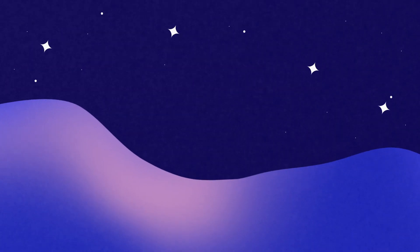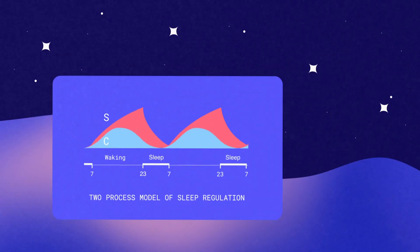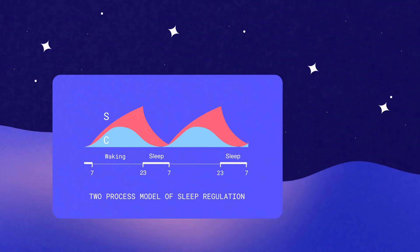So there you have the two process model of sleep regulation. Whilst it doesn't explain everything about sleep-wake regulation, it's a really useful conceptual model that allows us to understand how process S and process C work together to help get you a good night's sleep.